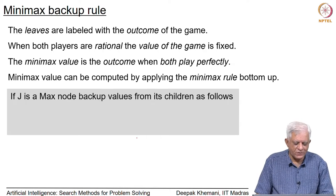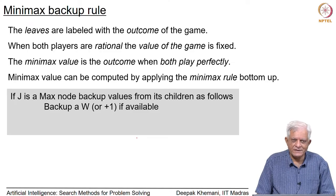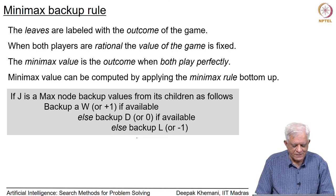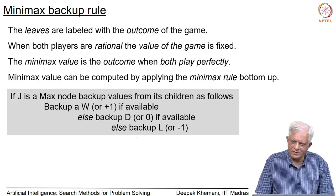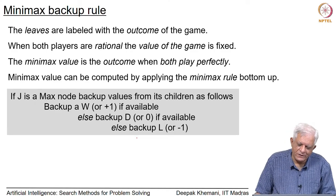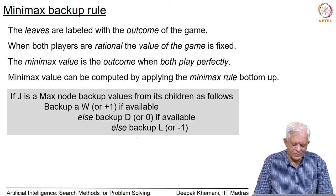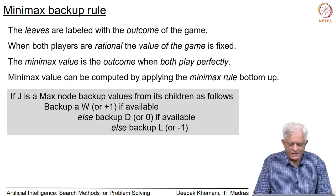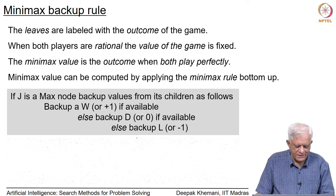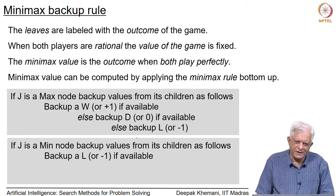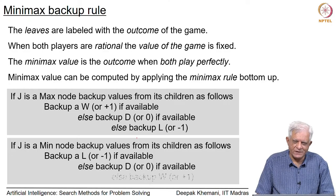The minimax value of a game tree can be computed by applying the minimax rule in a bottom-up fashion — you start from the leaves and go up towards the root. The minimax rule is: if the node you are looking at is a Max node, back up values from its children as follows — if a W node is available, back it up (+1); if W is not available, back up D (0); else back up L (-1). This means if there is a move in which Max can win, Max will make that move.